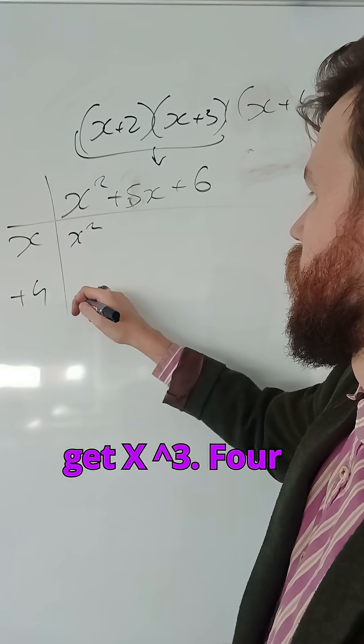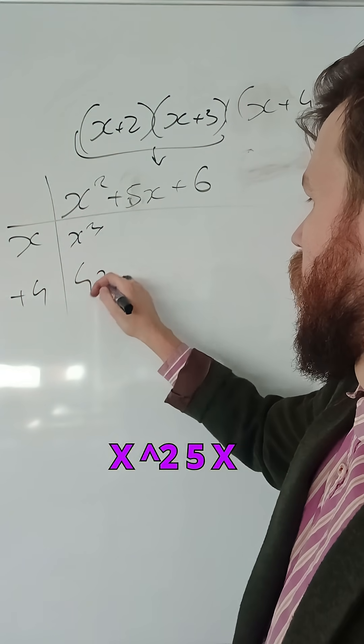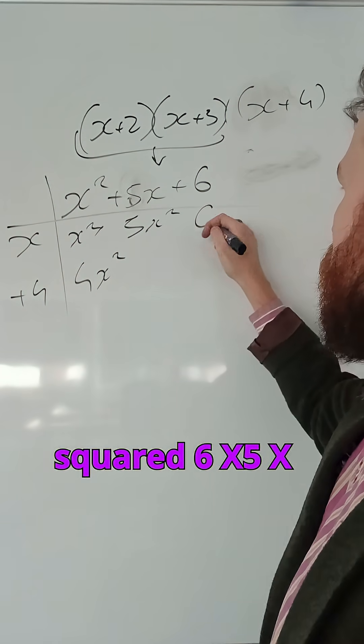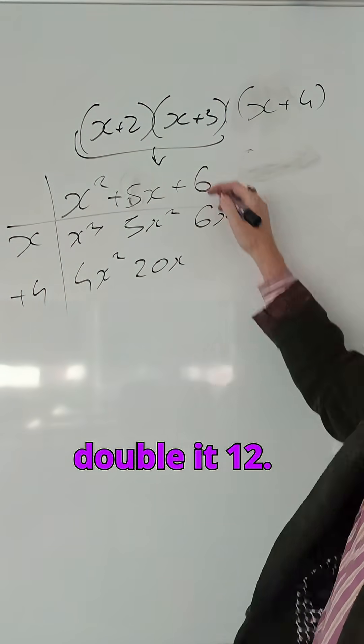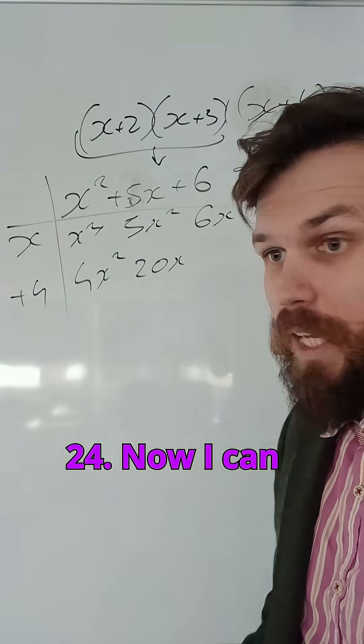So I get x cubed, 4x squared, 5x squared, 6x, 5x plus 4 gives me 20x, and 4 times 6, double it, 12, double it again, 24.